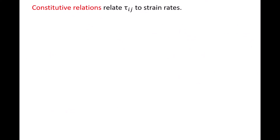The constitutive relations allow us to relate the viscous stresses to strain rates, which are expressed in terms of velocity gradients. It should be noted that the remaining part of this derivation of the Navier-Stokes equations has been simplified somewhat to be appropriate for an undergraduate fluid mechanics course. In order to use the constitutive relations, we need to make some assumptions about the flow. First, we assume the fluid is Newtonian, meaning the viscous stresses tau are proportional to the strain rates epsilon.